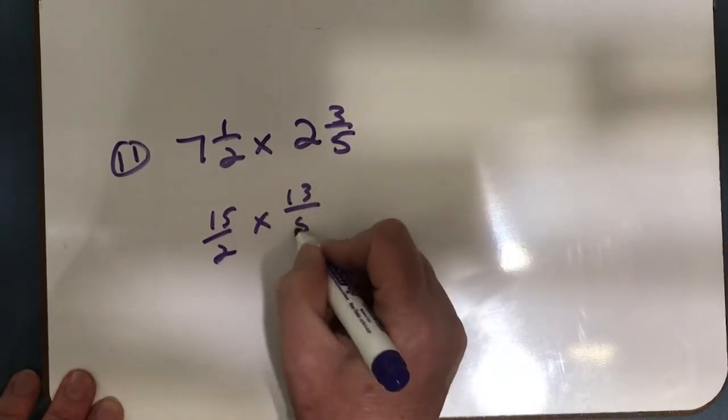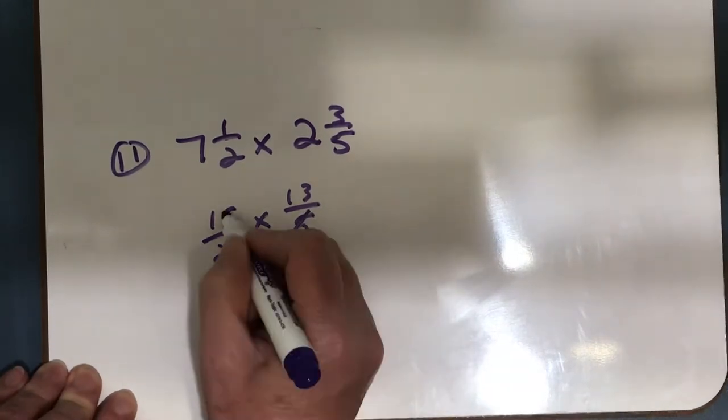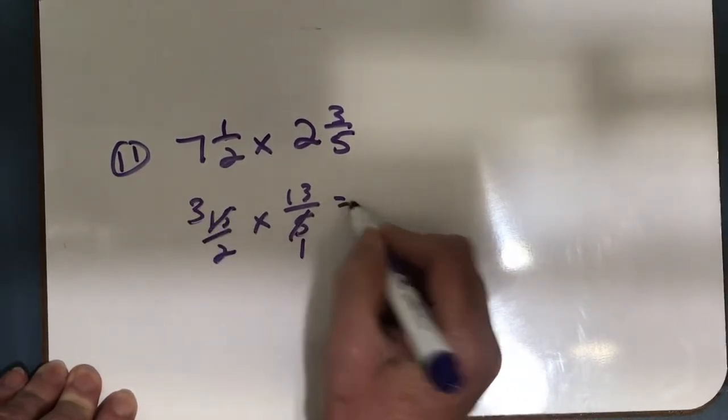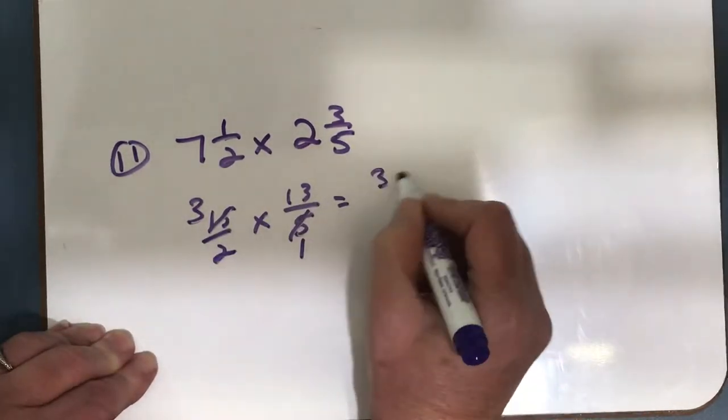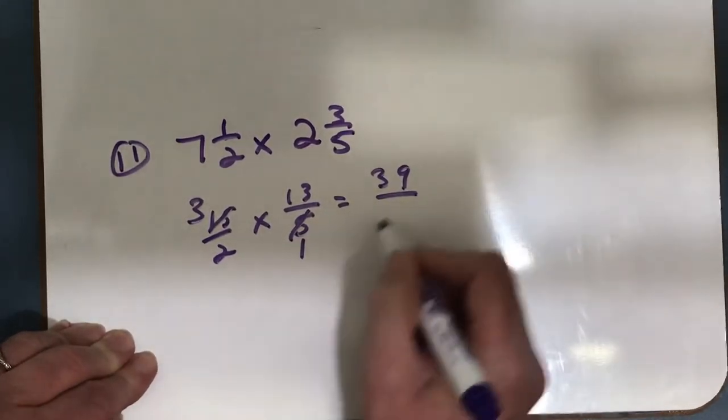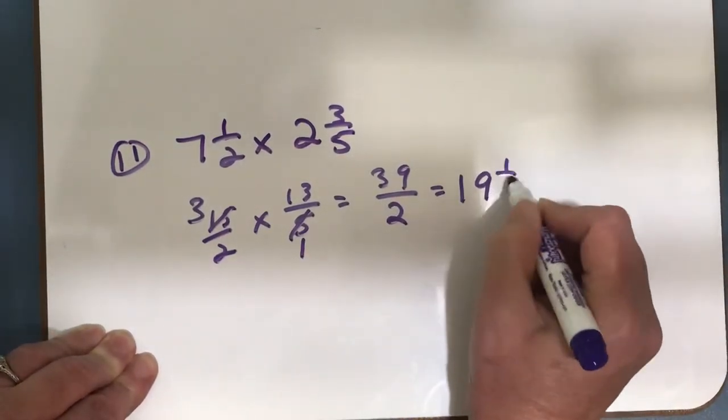I'm going to simplify. 5 goes into 5 once and it goes into 15 three times. There's nothing else I can simplify. So 3 times 13 is 39, 2 times 1 is 2. So I have 39 halves which equals 19 and 1 half.